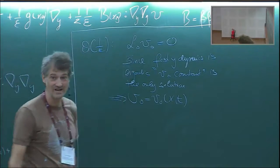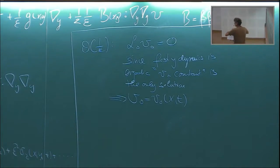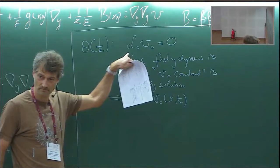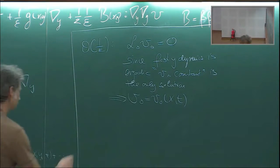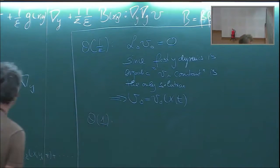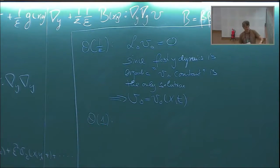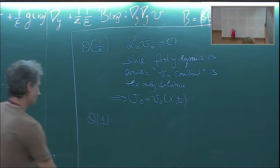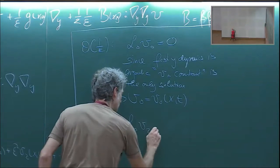We also get the information that L0 is not invertible — and that will matter at the next order. At order one, we have dV0/dt = L0 V1 + L1 V0, which we write as L0 V1 = dV0/dt − L1 V0. We don't know what V1 is, and since L0 is not invertible we need a solvability condition.